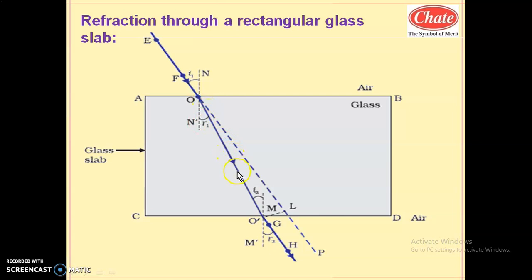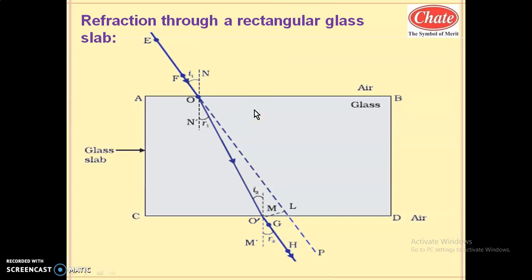Once the light comes out from the denser medium to a rarer medium, the opposition decreases. As opposition decreases, speed increases, and as speed increases, it bends away from the normal. Remember: when light travels from rarer to denser medium, speed decreases and it bends toward the normal. When light travels from denser to rarer medium, speed increases and it bends away from the normal.